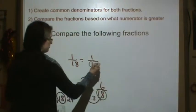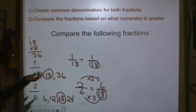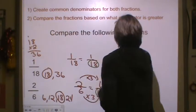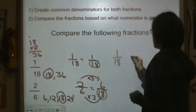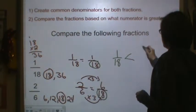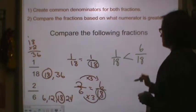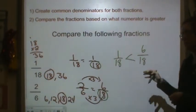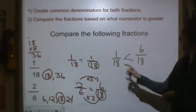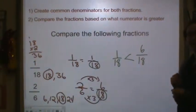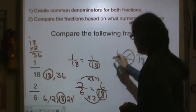My denominator, or the size of my units, are the same, so now I can see which one's bigger. I know that 1/18 is less than 6/18, right? 6/18 is a lot more than 1/18 because you've got 5 more eighteenths there. So that's how we compare them.